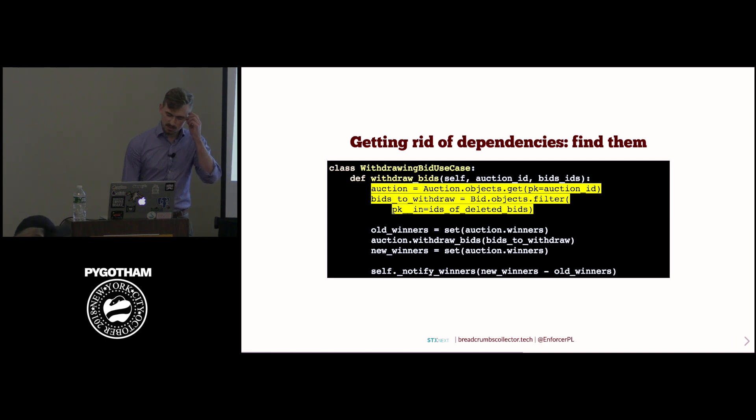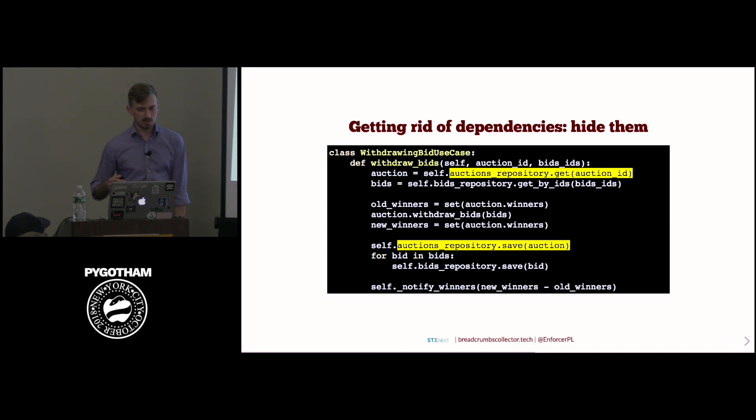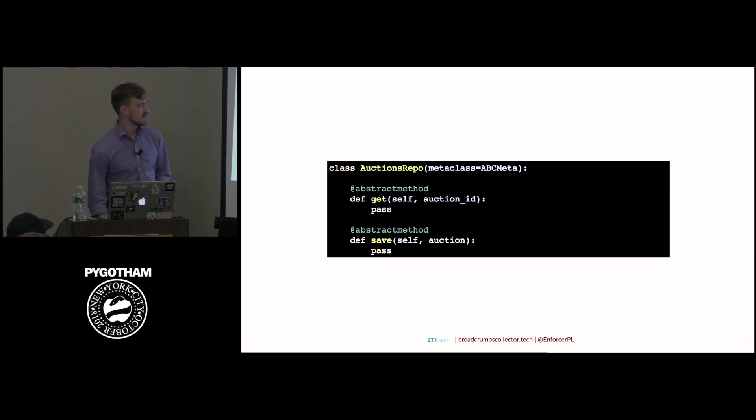So the first thing when we want to get rid of dependencies is to find them. This is the same code from the initial use case scenario. So, for example, we are coupled with Django ORM here because we are using it directly to fetch some objects and then to do some operations on them. So the typical idea of software engineering, how to hide something or solve a problem, is usually to introduce another layer of abstraction. So I will use such an abstraction, just call it auctions_repository. Can't really tell what it is, can't really tell what it does, except it has these two methods. One is get and one is save. And if I were to write it down as a class or maybe some abstract type, it would be such an abstract class.